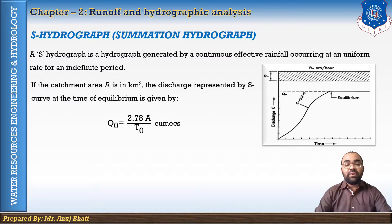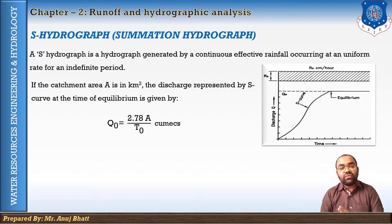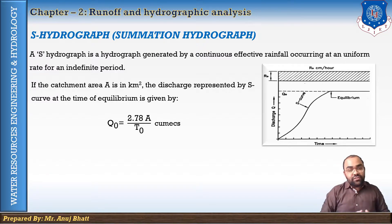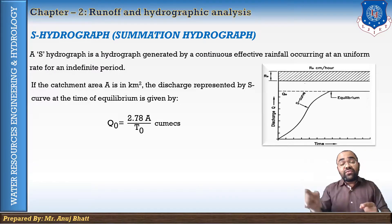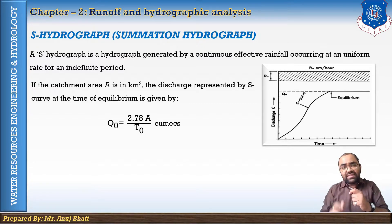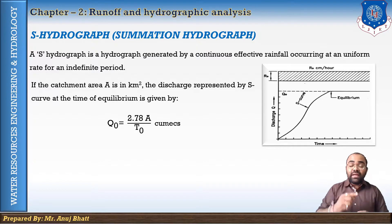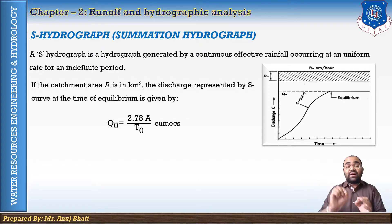Following unit hydrograph theory, when effective rainfall occurs at a uniform rate continuously, the horizontal line can be divided into several equal durations of convenient magnitude. Each equal part — say one centimeter — gives a unit hydrograph duration. If the same unit hydrograph is plotted successively with different offsets equal to the unit duration, the overlapping ordinates are summed up, and joining those ordinates gives an exact S-hydrograph.